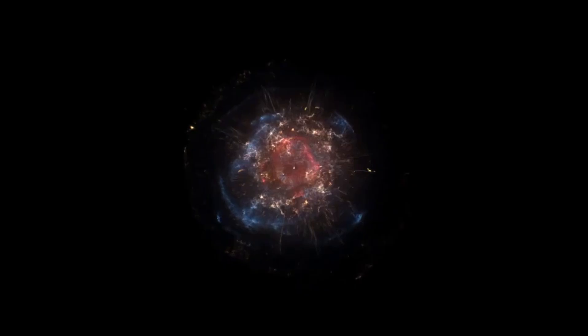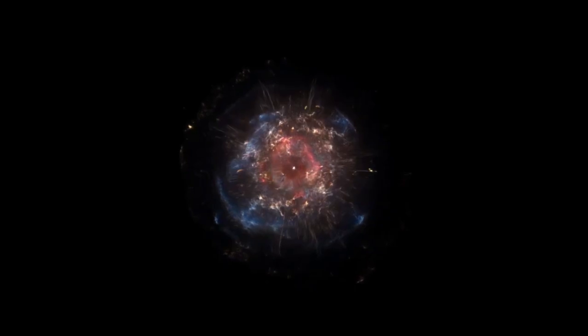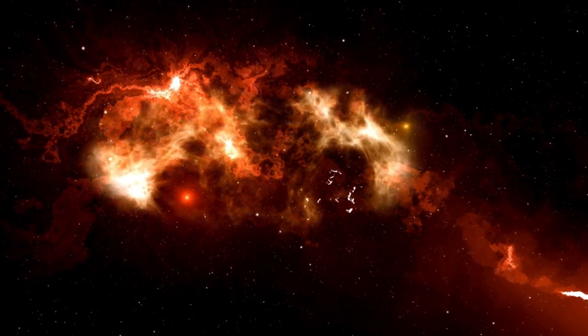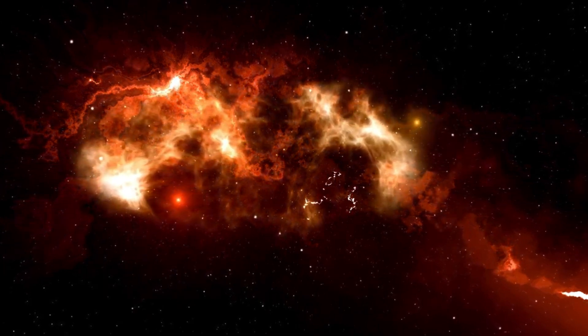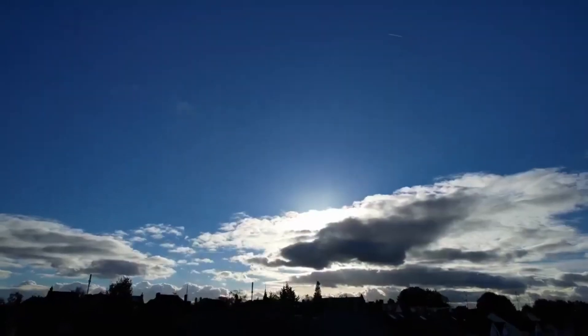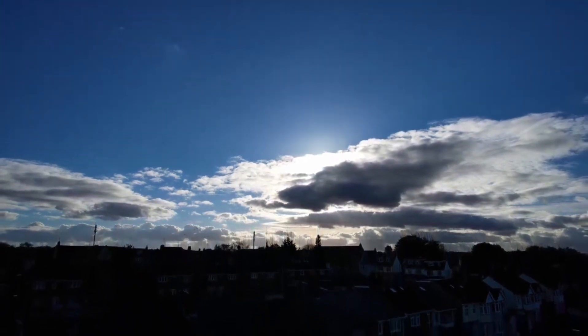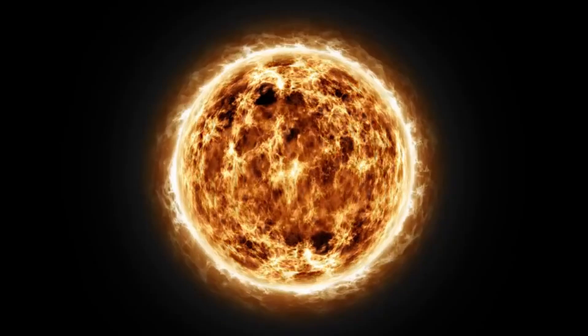Betelgeuse, often referred to as the shoulder of Orion, is one of the brightest stars in the night sky and one of the largest stars known to humanity. If placed at the center of our solar system, its surface would extend beyond the orbit of Mars, engulfing the inner planets in its fiery embrace. This massive star, located approximately 650 light-years from Earth, is a semi-regular variable star, meaning its brightness fluctuates over time.